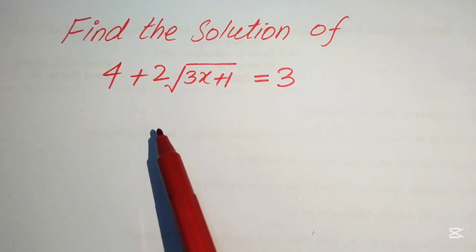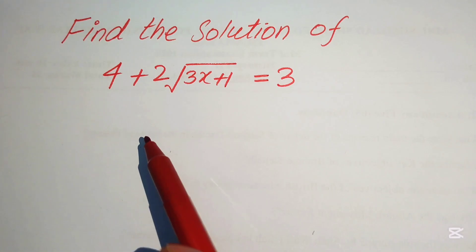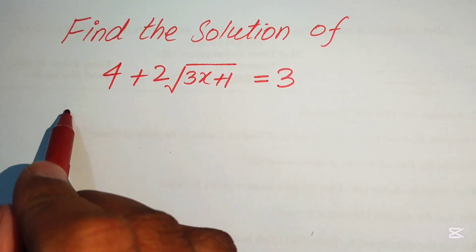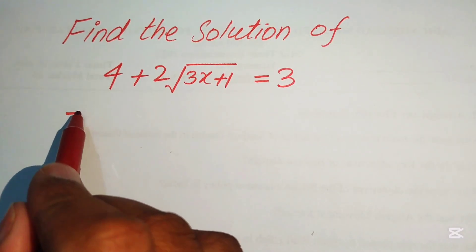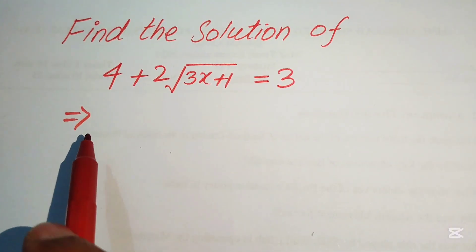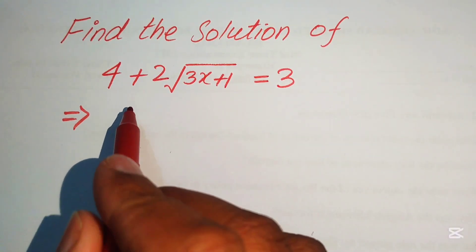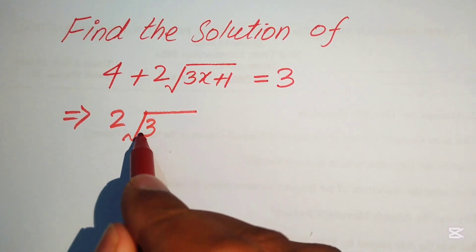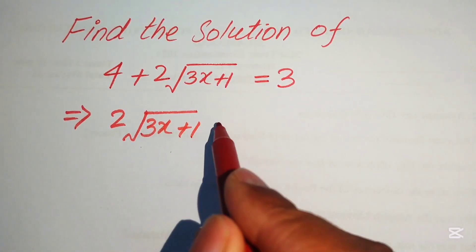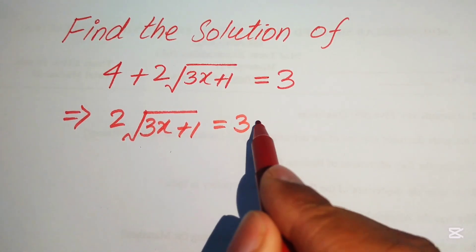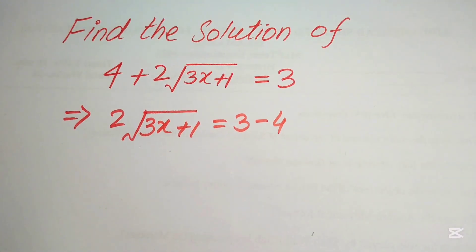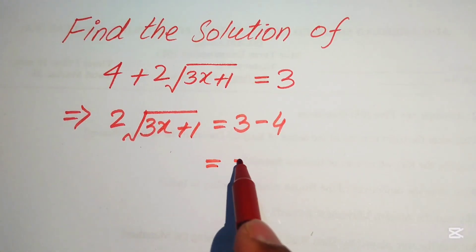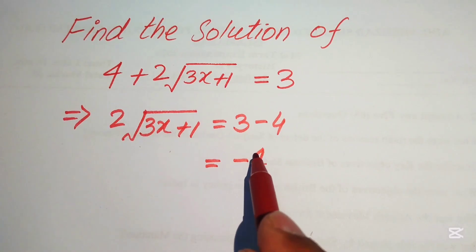First we need to isolate the radical term, and for this we need to move this 4 to the right hand side. When we move this 4 to the right hand side, it will be written as 2 into square root of 3x plus 1 equals to 3 minus 4. So here we get 3 minus 4 equals to minus 1.